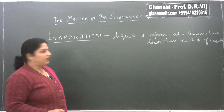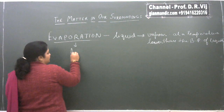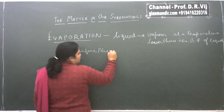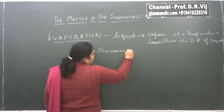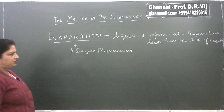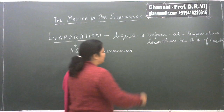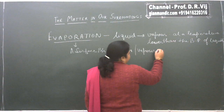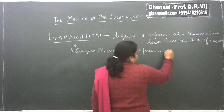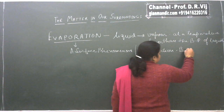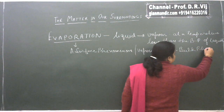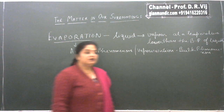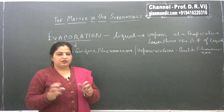Another interesting aspect about evaporation: evaporation is said to be a surface phenomenon — the process which occurs only on the surface of the liquid. On the other hand, vaporization is a bulk phenomenon. It is a process which does not occur only on the surface; it occurs throughout the whole bulk.